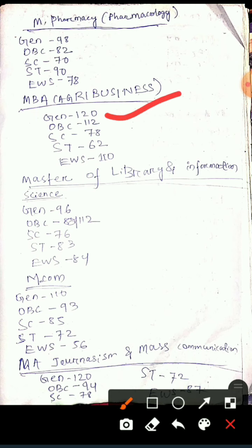So let's start the video. I will again repeat that these are expected marks. The expected marks may vary from the actual marks by a difference of 2 to 3 or 3 to 4 marks, not more than that. So let's see what is the expected mark you have to carry to get a seat in Central University of Punjab.